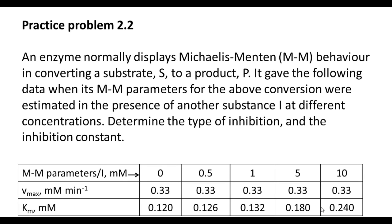Practice problem 2.2. An enzyme normally displays Michaelis-Menten behavior in converting a substrate S to a product P. It gave the following data when its Michaelis-Menten parameters for the above conversion were estimated in the presence of another substance I at different concentrations. Determine the type of inhibition and the inhibition constant. The Michaelis-Menten parameters, Vmax and Km, at different inhibitor concentrations were given in this table.